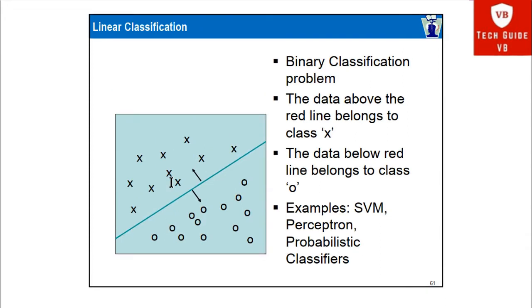Next is linear classification, where a binary classification problem exists. The diagram shows linear classification where a line separates two classes. The data above the red line belongs to class X and the data below the red line belongs to class O. Examples of linear classifiers are SVM, perceptron, and probabilistic classifiers.